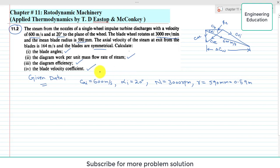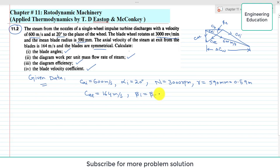The absolute velocity of steam at exit from the blade C_AE is 164 meters per second. The blades are symmetrical, meaning the blade angles at inlet and outlet are the same and both equal to beta.